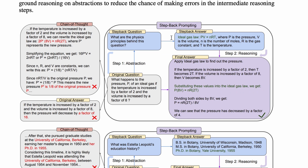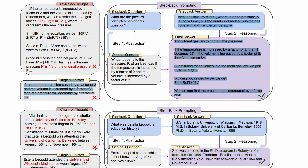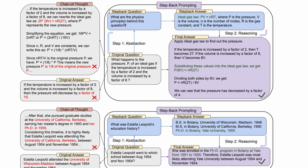The technique is a very simple approach. You have an original question, and the first step is abstraction. In abstraction, you ask the LLM to create a step back question — something that is higher level. For example, if you have a question that says 'what happens to pressure B, blah blah blah,' then you simply create a step back question that says 'what are the physics principles behind this question?' This is the first step.